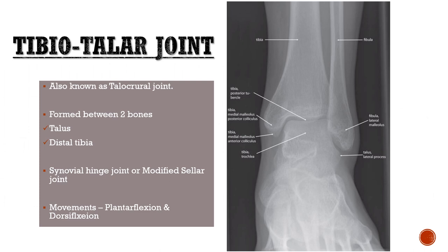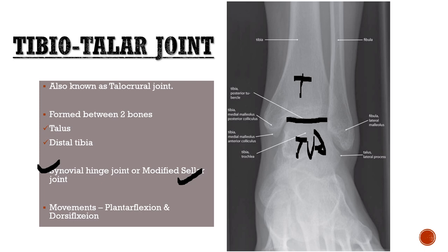The tibiotalar joint is formed between the talus and the distal tibia. It is a synovial hinge joint, also called a modified sellar joint. The movements possible at this joint are plantar flexion — taking your foot towards the ground — and dorsiflexion — taking your foot away from the ground.